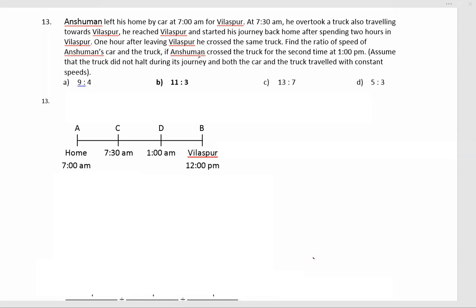One hour after leaving Vilaspur, he crossed the same truck. Find the ratio of the speed of Angshuman's car and truck. If Angshuman crossed the truck the second time at 1 pm, so he left Vilaspur at 12 pm. That means he reached Vilaspur at what time?